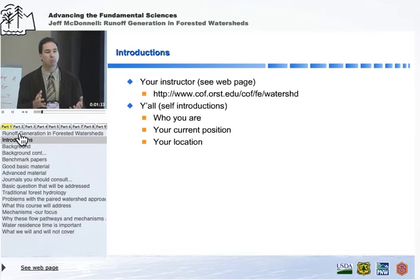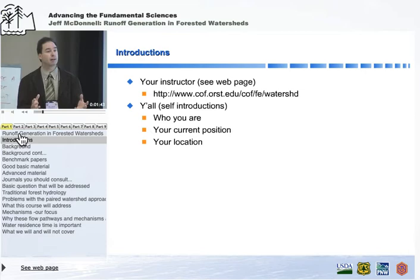Knowing where water goes when it rains, the residence time of water in your stream, and the main flow paths, I think is a necessary first step before you can choose an appropriate model or think about how some kind of land use change might impact water quantity or water quality.